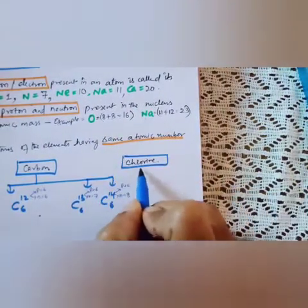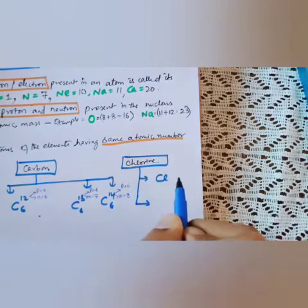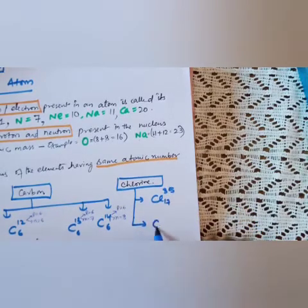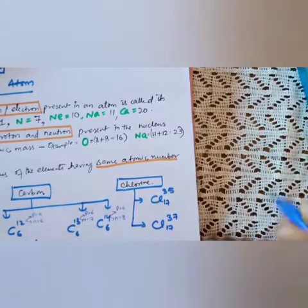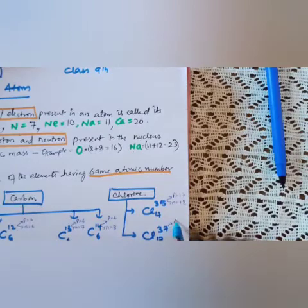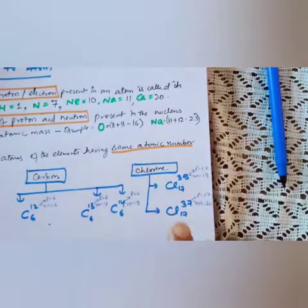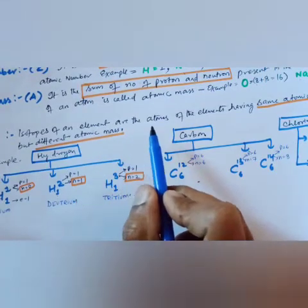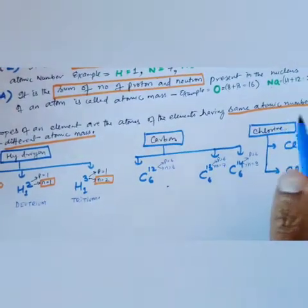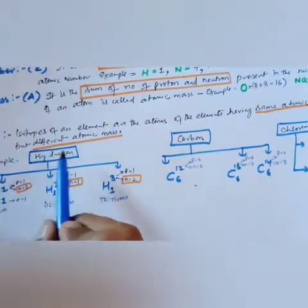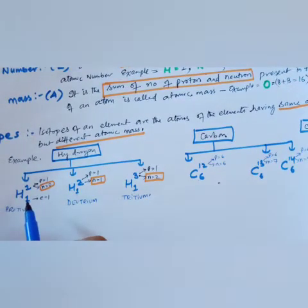Chlorine has two isotopes. Chlorine's atomic number is 17. Cl-35 has 17 protons and 18 neutrons; Cl-37 has 17 protons and 20 neutrons. To recap: isotopes of any element are atoms having the same atomic number but different atomic mass. We write atomic number at the bottom and atomic mass at the top.